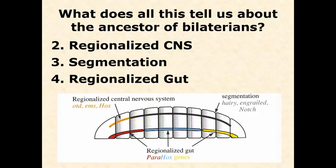Three other features: first, a regionalized central nervous system — the anterior part of the CNS is different from the posterior part, most obviously in higher vertebrates where the brain is very complex and the spinal column less differentiated. Second, the ancestor of all bilaterians was segmented, which we still see strongly in arthropods, annelids, and to some extent mollusks and vertebrates, even if it's less apparent externally in the latter.